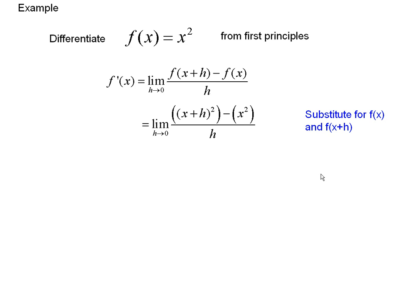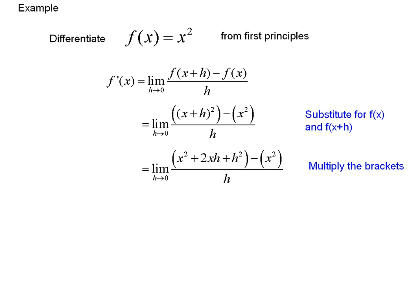Next step: multiplying the brackets out. There are the brackets — multiply it out. Remember your middle term of your binomial. Next step, simplify. We've got x squared and minus x squared, and it simplifies to that.